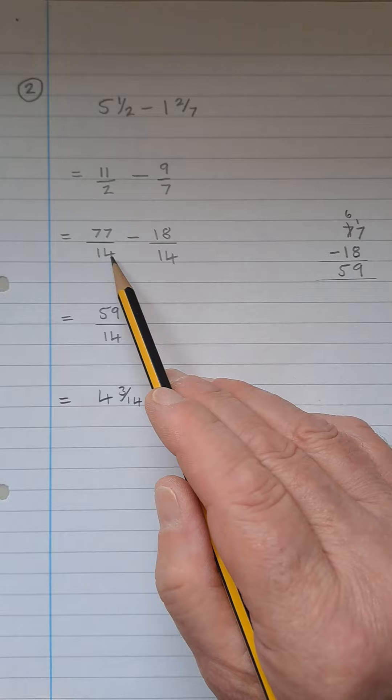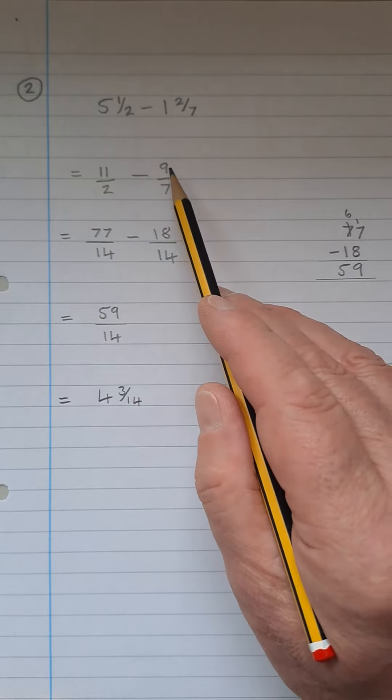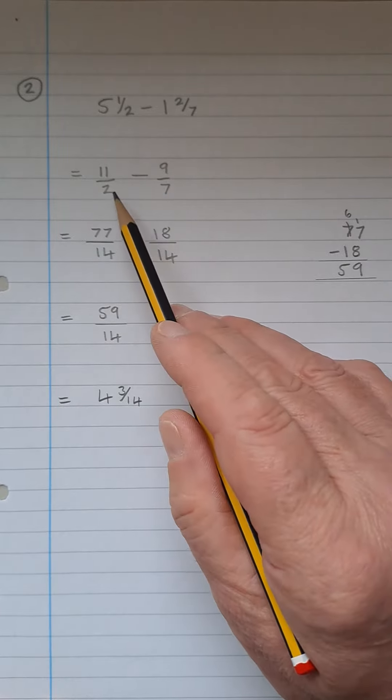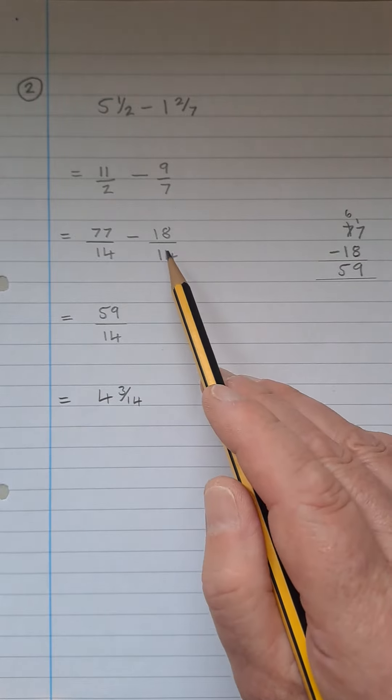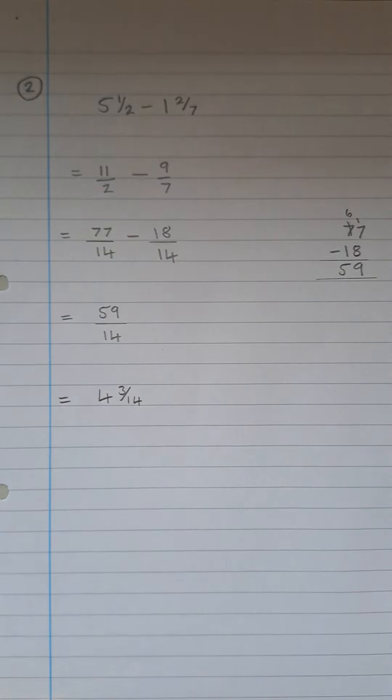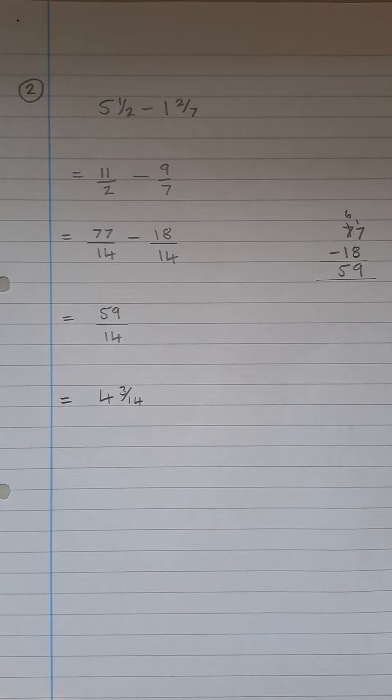7 times 11 is 77, 7 times 2 is 14. Take away and we multiply this top and bottom by 2, 2 times 9 is 18, 2 times 7 is 14.